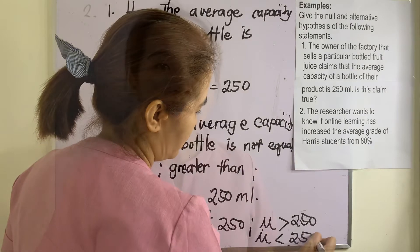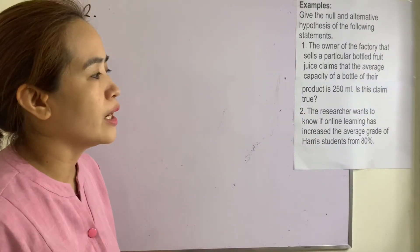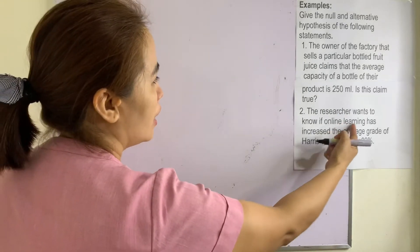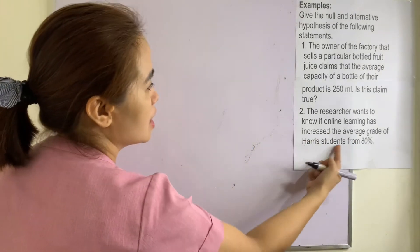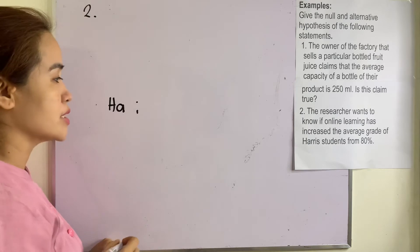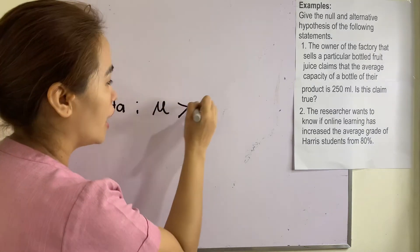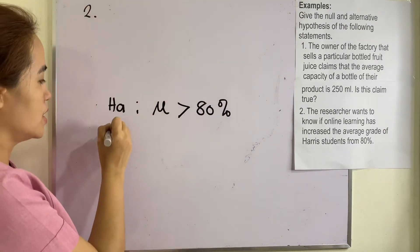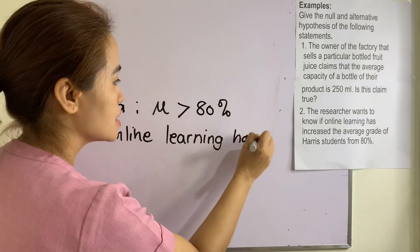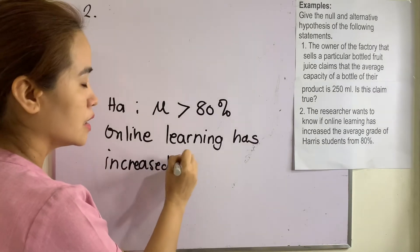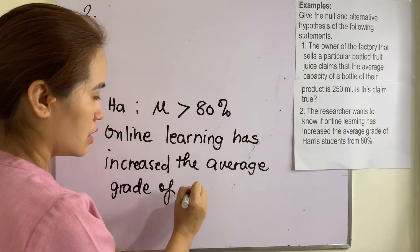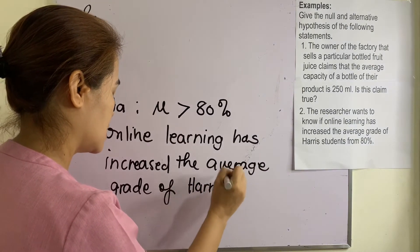Example number two: a researcher wants to know if online learning has increased the average grade of higher students from 80 percent. If we analyze this, 'increased' means greater than 80 percent. So this falls under the alternative hypothesis: mu is greater than 80 percent. Online learning has increased the average grade of students from 80 percent.